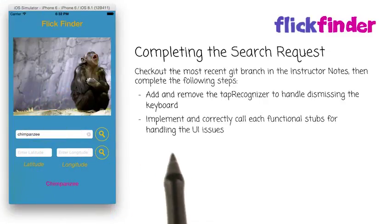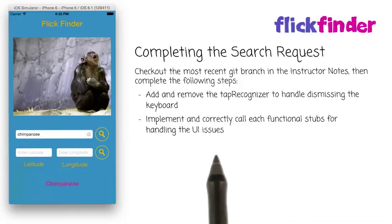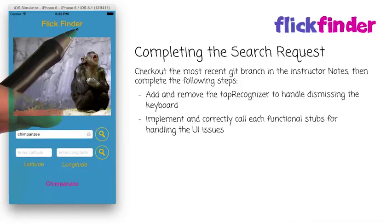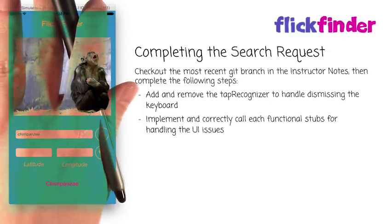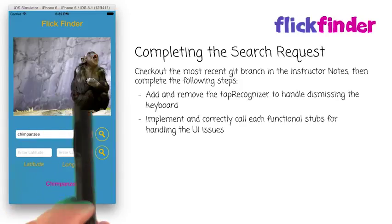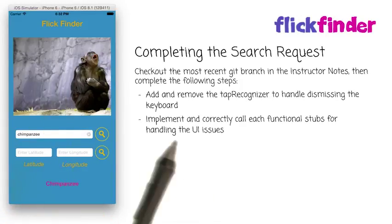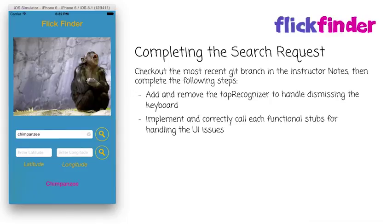Then you'll want to implement and correctly call each of the functional stubs for handling the UI issues. Recall that the UI issue is when the keyboard comes up, it blocks the underlying controls so we can't see what we're typing. So we want to shift the whole view up so that our controls will be visible, and then when the keyboard dismisses, we'll shift everything back down.